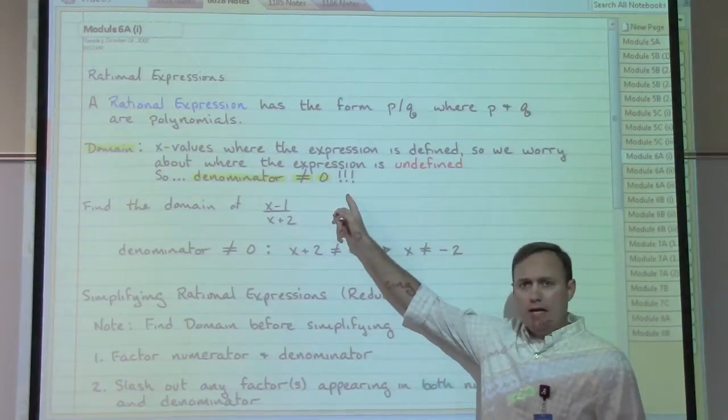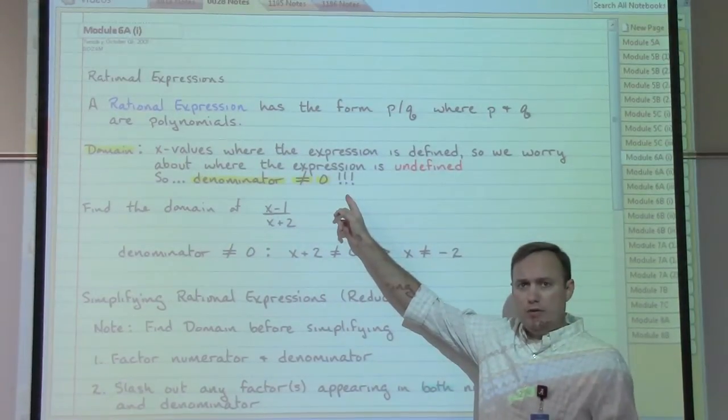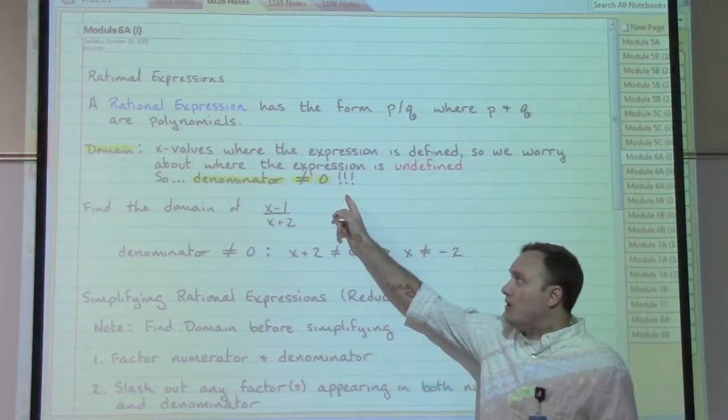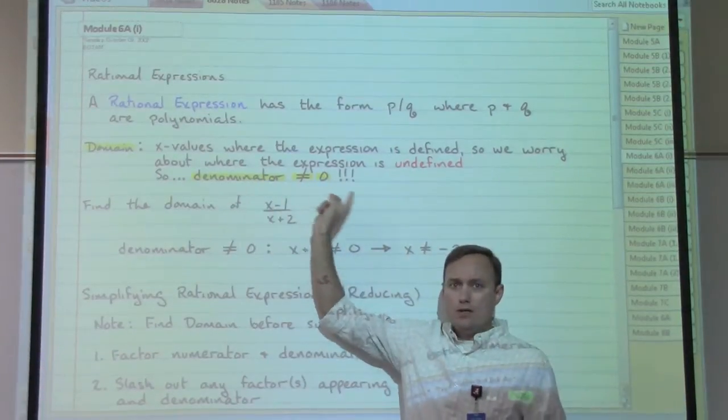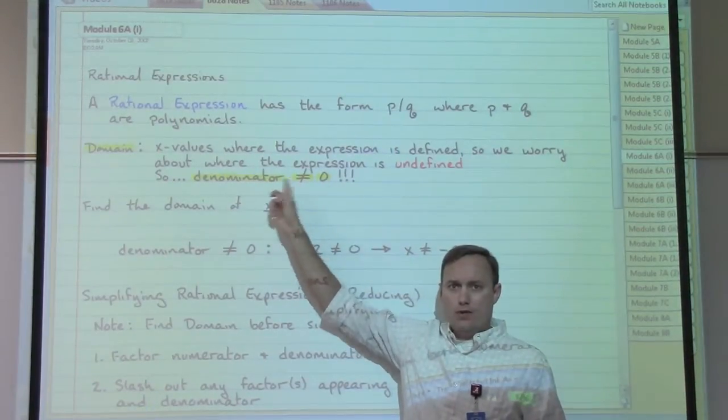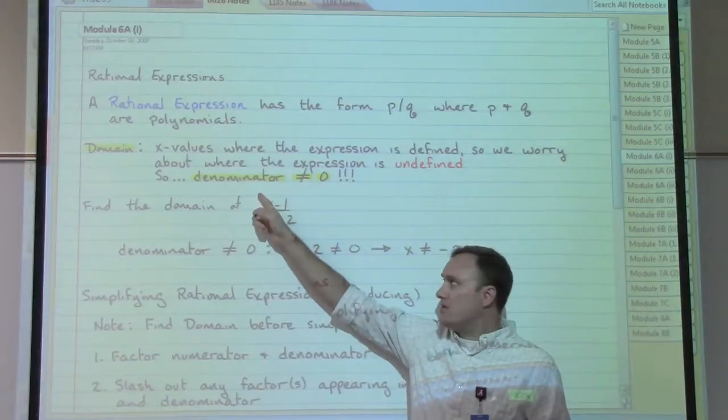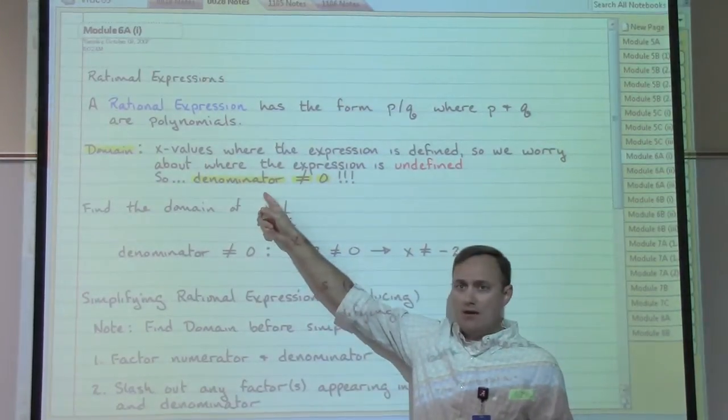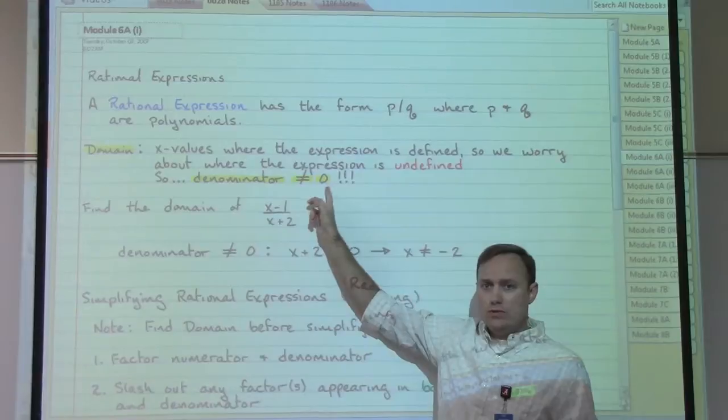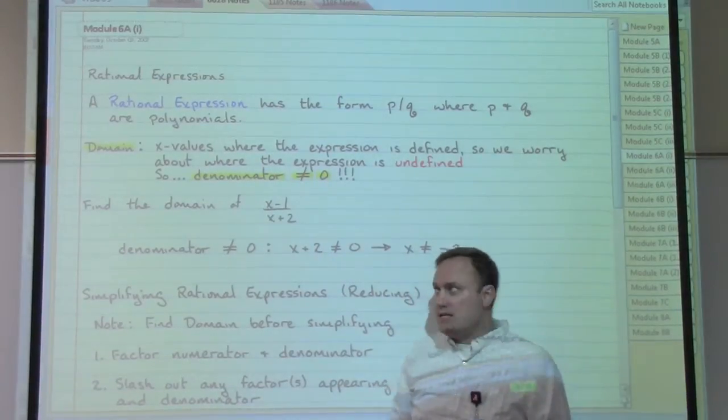Which means in our domain, we only include the numbers we're allowed to plug in. We have to throw away the ones that we're not allowed to have, the ones where our denominator would be zero. So we can say very simply, our denominator is not allowed to equal zero. And that gives us an idea of our domain.